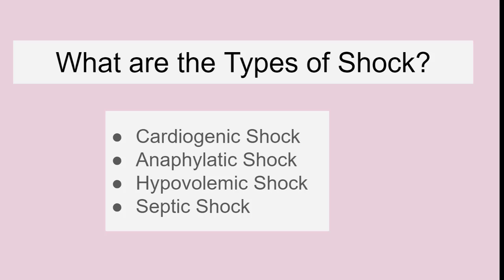Cardiogenic shock occurs when the heart is unable to supply blood to vital organs. Anaphylactic shock, another name for anaphylaxis, is the reaction to certain allergens. Hypovolemic shock is a life-threatening condition caused by rapid loss of blood or body fluids, and it is commonly seen in vomiting, diarrhea, and excessive bleeding. Septic shock is a condition caused by severe localized or systemic infection that requires immediate medical attention, and it can cause organ failure and dangerously low blood pressure.